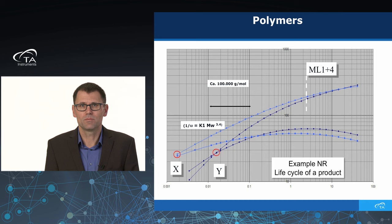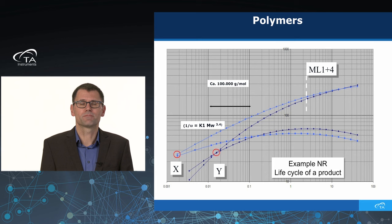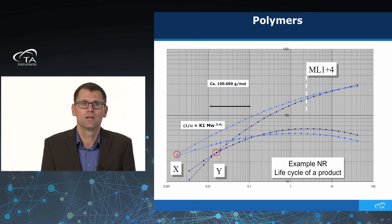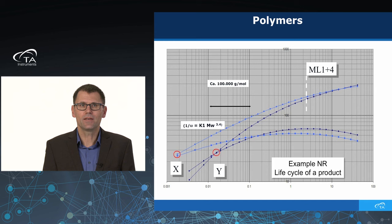One of our first examples was on natural rubber from a customer with the same Mooney viscosity. When you look at the plot, you see a very large difference in molecular weight. This is very important if you use natural rubber in your cured rubber products, especially for life cycle and dynamic behavior, where you need a high molecular weight. On the standard Mooney viscosity quality control, you cannot differentiate these two types of natural rubber.